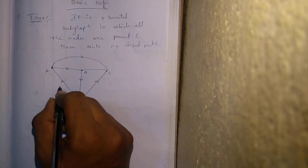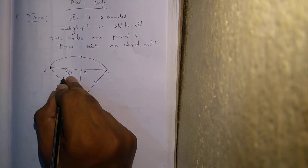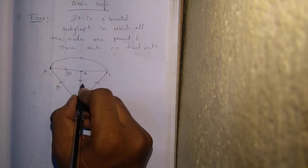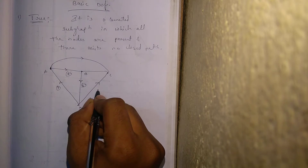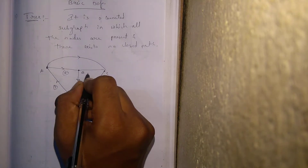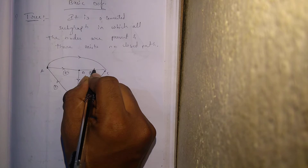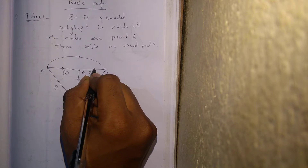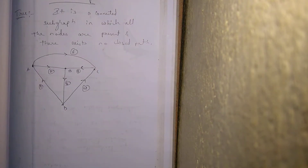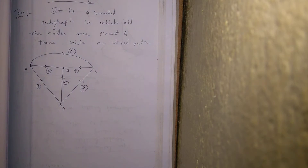I'll name each branch: one, two, three, four, five — and I forgot to mention the current direction here, I'll assume it this way — and this will be my sixth branch. This is the basic graph.